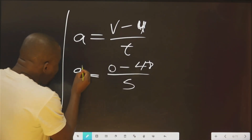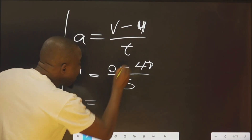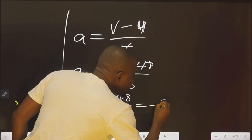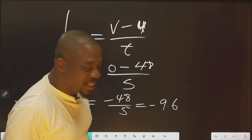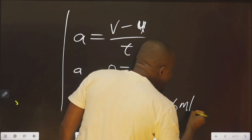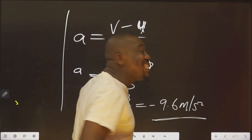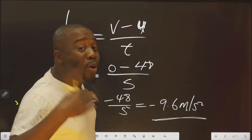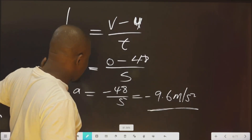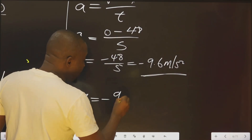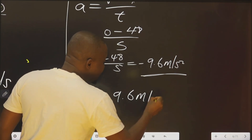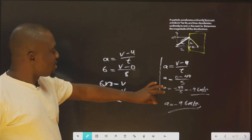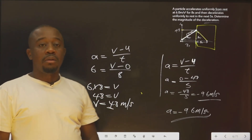Therefore, we are looking for a: a = (v − u) / t = (0 − 48) / 5 = −48 / 5, which gives −9.6 meter per second squared. The value is negative because deceleration is a negative value. So the deceleration is 9.6 meter per second squared in magnitude. Hope you got this explanation correctly.